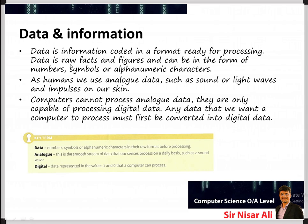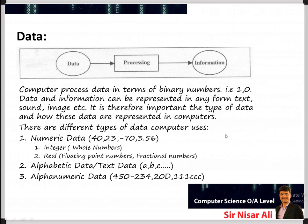Data is actually the raw facts and figures, and they are in the form of numbers, symbols, or alphanumeric characters. When it comes to humans, we can only understand analog data — we can read or feel analog data like sound or light waves. But when it comes to computers, they cannot directly understand analog data. The computer is only capable of processing digital data.